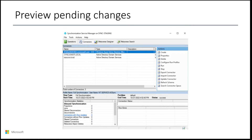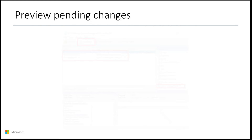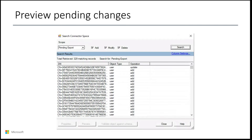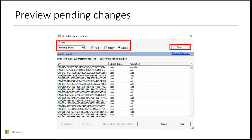To do a pending export query, you simply need to access the synchronization service manager console of your staging server. On the connectors tab, you will select each individual connector and click on search connector space. In this view, you will change the scope to pending exports and select between add, modify, or delete operations, then press search to run your query. If changes are detected, this query will return a list of objects that can be inspected to view the operation and attributes that are pending changes. This report can also be exported for more programmatic and detailed analysis.